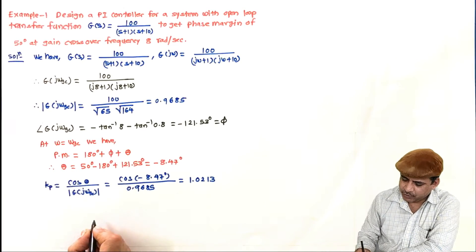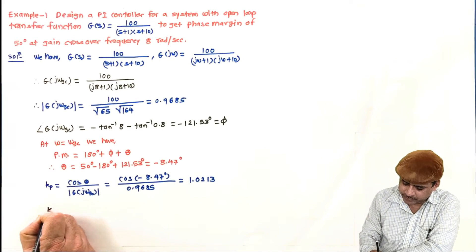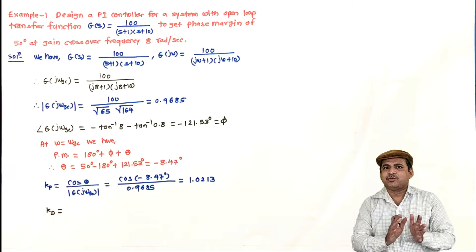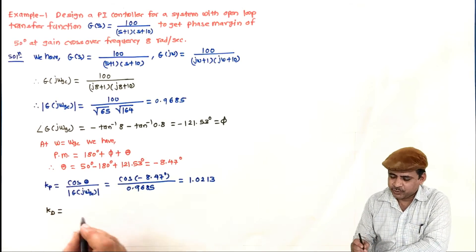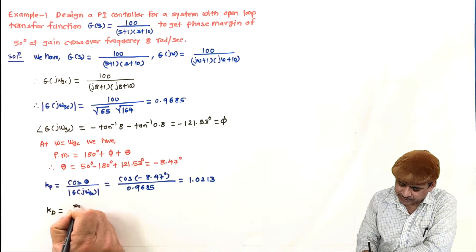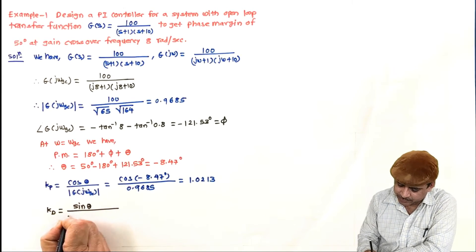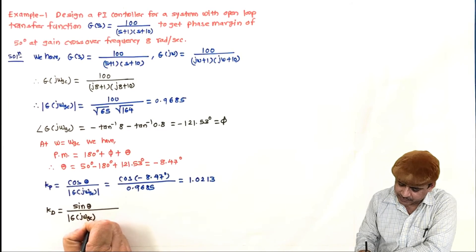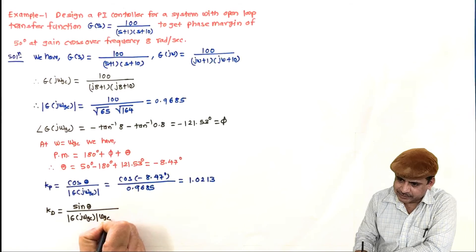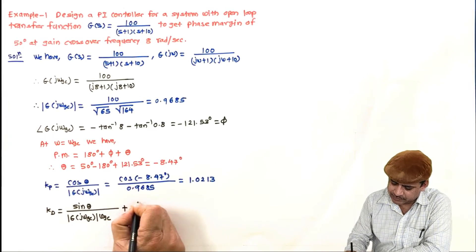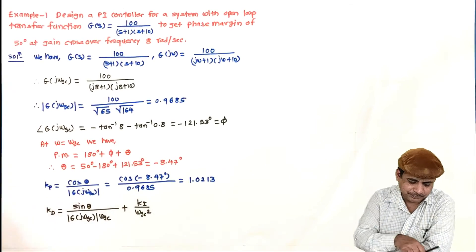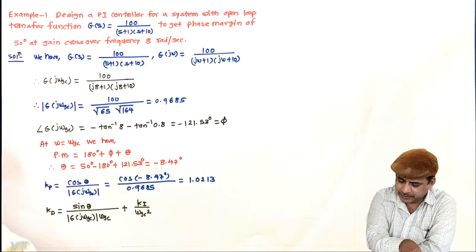And then for calculating Ki, we need to equate Kd equal to 0 in the formula of Kd. So formula for Kd is sin θ divided by magnitude of system at ωgc times ωgc, plus Ki by ωgc squared.